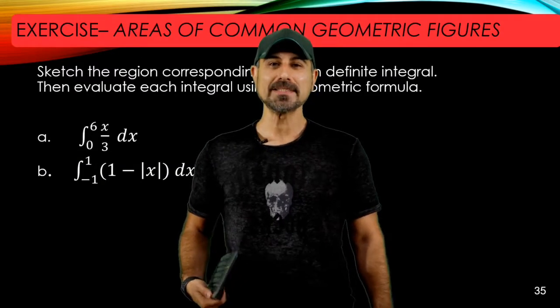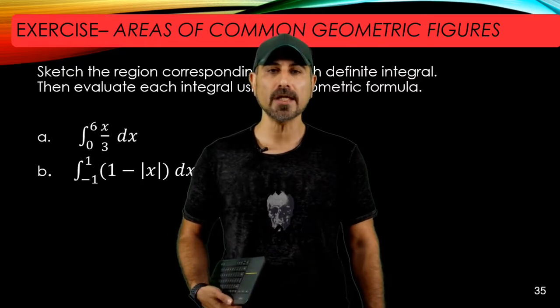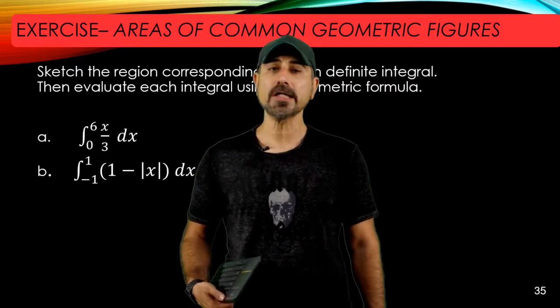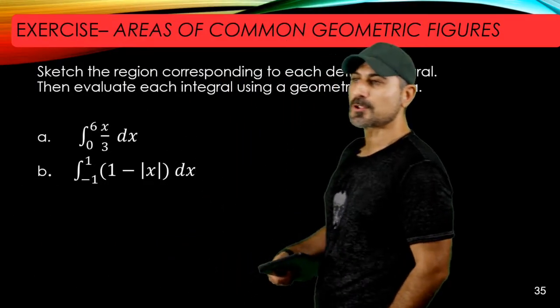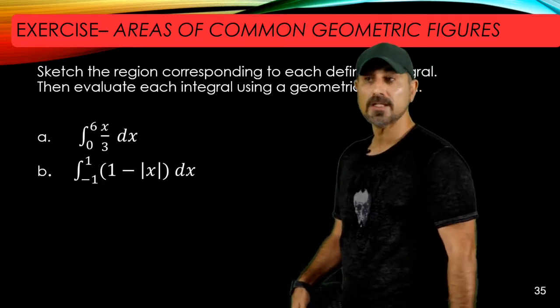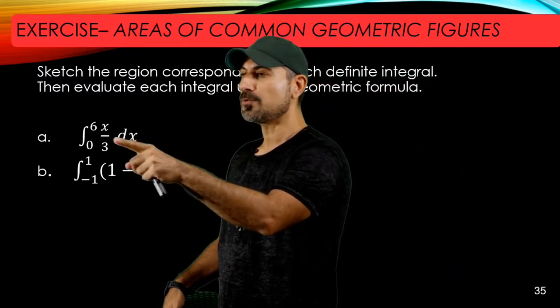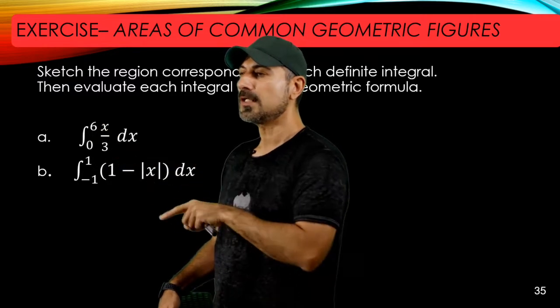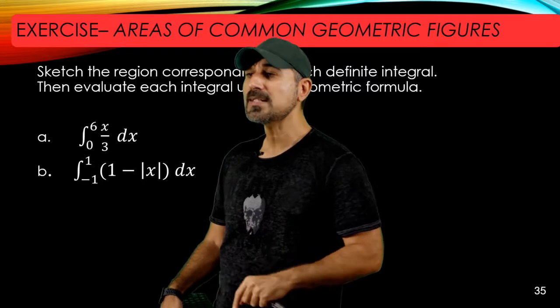Hello, welcome back. Today we are going to learn how to evaluate certain definite integrals by using the areas of common geometric figures. For this purpose, we are given two definite integrals. One of them is the integral of x over three from zero to six, and the other one is the integral of one minus the absolute value of x from negative one to one.